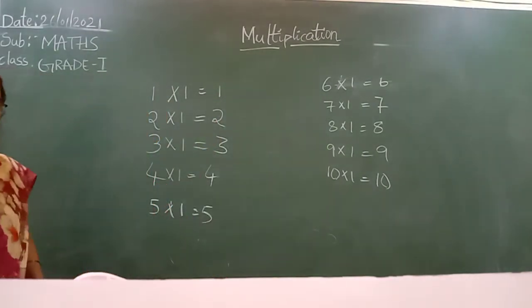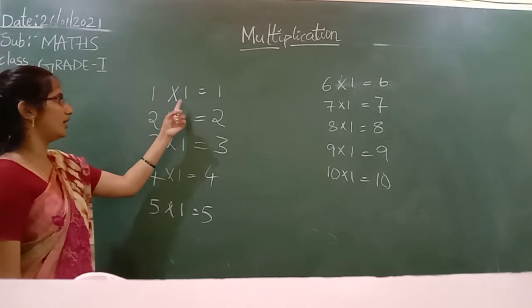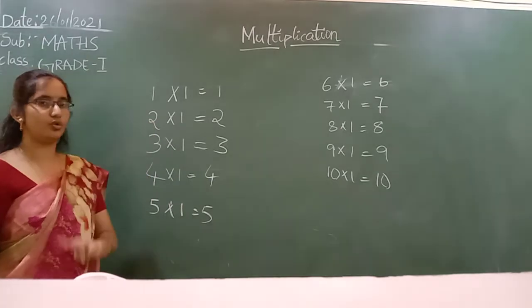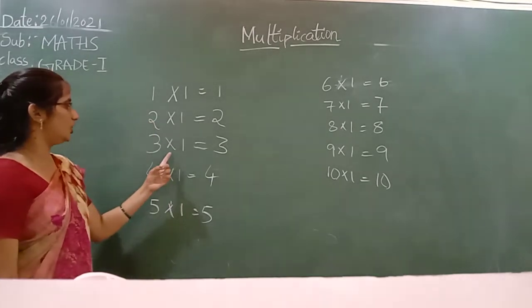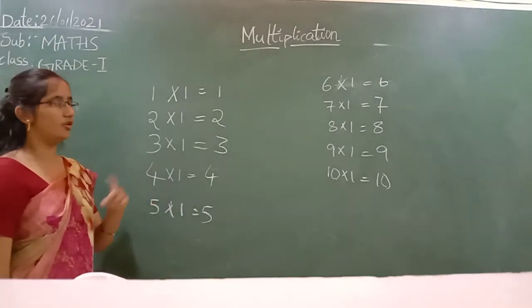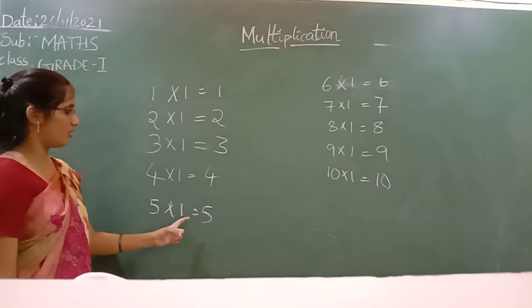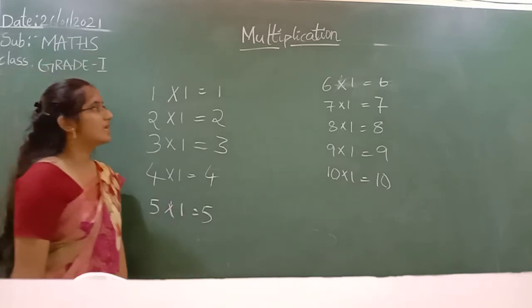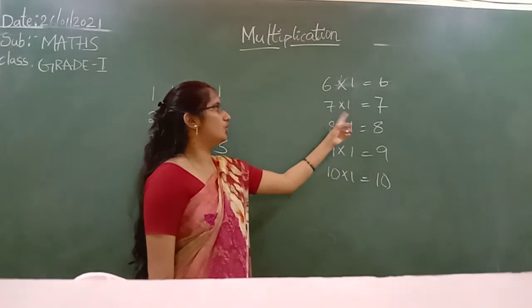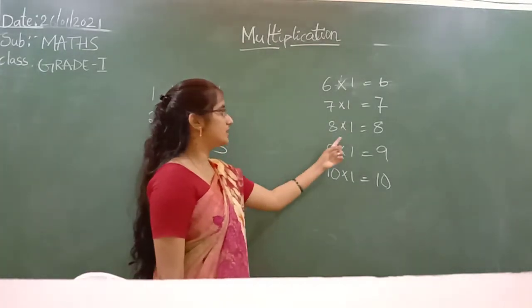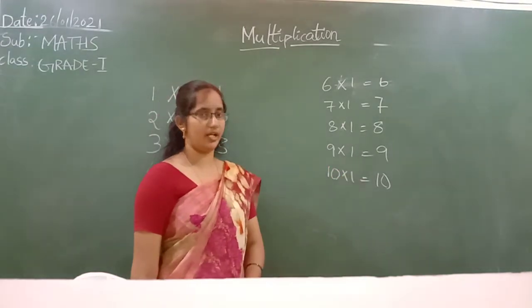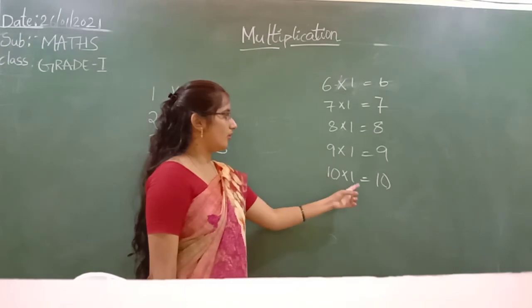Now read again, come with me. 1 into 1 equal to 1. 2 into 1 equal to 2. 3 into 1 equal to 3. 4 into 1 equal to 4. 5 into 1 equal to 5. 6 into 1 equal to 6. 7 into 1 equal to 7. 8 into 1 equal to 8. 9 into 1 equal to 9. 10 into 1 equal to 10.